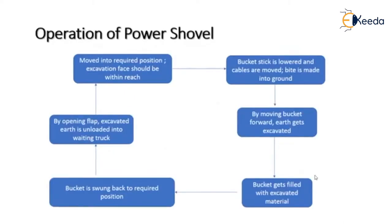The operations of the power shovel begin with moving it into the required position so that the excavation face is within reach of the equipment. Next, the bucket stick is lowered and the cables are moved. A bite is made into the ground using the teeth of the bucket as the boom and stick are moved.